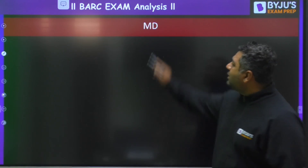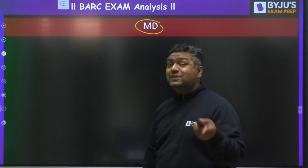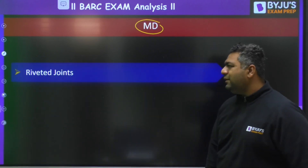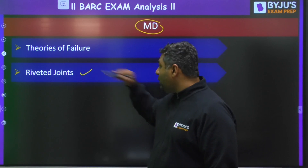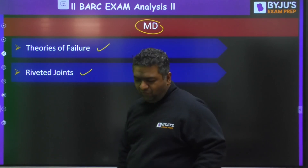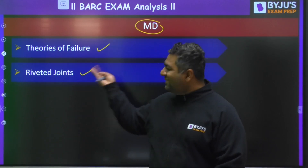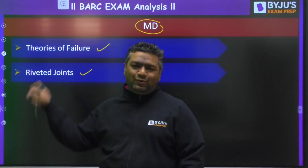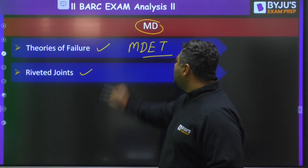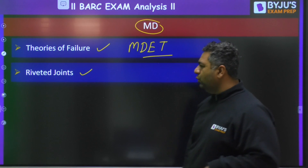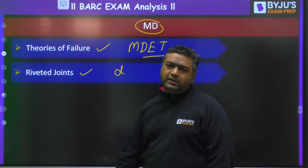Moving to Machine Design, which is an application subject. As I said, application subjects had fewer questions, and this year followed the same trend. Questions were from riveted joints and theory of failures. Theory of failure is also taught in SOM, so MD weightage effectively reduces. One question was from MDET — a simple one where sigma 1 and sigma 2 were given. The riveted joint question asked for the diameter of the riveted joint.